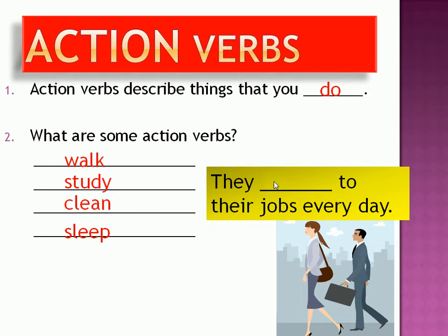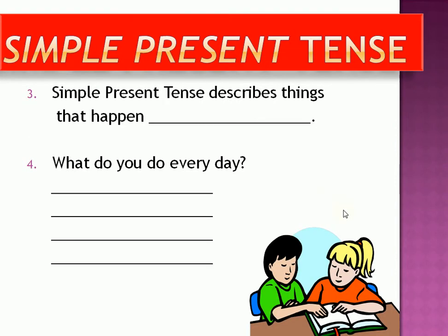Well, let's look at the sentence: they walk to their jobs every day. I used 'every day' here because that really is an important part of present tense. The simple present tense describes things that happen every day. We don't really need to say every day — it could be every month or every year or even every hour, but it's something that happens regularly.